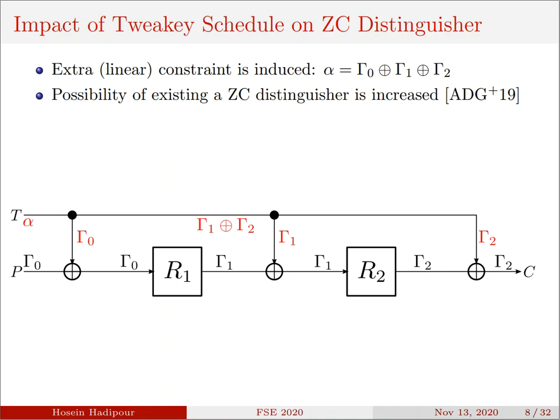So let's consider the tweak schedule in our analysis. Because of branching points in tweak schedule, the input mask for master tweak, which is denoted by α here, must equal the XOR of γ₀, γ₁, and γ₂. Hence, an extra constraint is induced: α = γ₀ ⊕ γ₁ ⊕ γ₂. Possibility of existing a zero-correlation distinguisher is increased when we consider the tweak schedule.